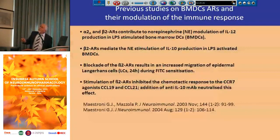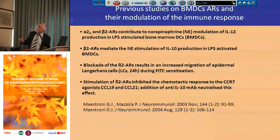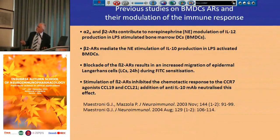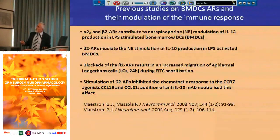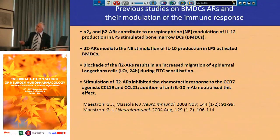The data we obtained are described in our publication. The key findings were: alpha-2 and beta-2 adrenergic receptors contribute to norepinephrine modulation of IL-12 production in LPS-stimulated bone marrow-derived dendritic cells. Beta-2 adrenergic receptor mediated norepinephrine stimulation of IL-10 production in LPS-activated bone marrow-derived dendritic cells. Blockade of beta-2 adrenergic receptor resulted in increased migration of epidermal Langerhans cells during contact hypersensitivity sensitization. Stimulation of beta-2 adrenergic receptor inhibited the chemotactic response to the CCR7 agonists CCL-19 and CCL-21, and addition of anti-IL-10 monoclonal antibody neutralized this effect.